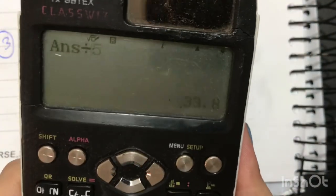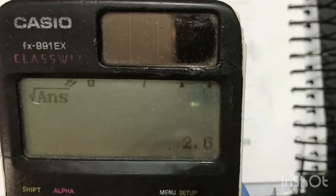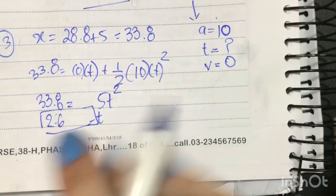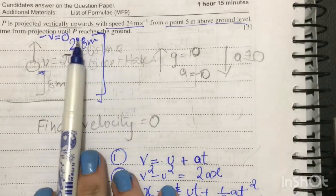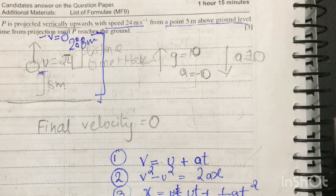And then the square root of this, which is 2.6. Now this is the time taken from the maximum height to the ground, which is 2.6.